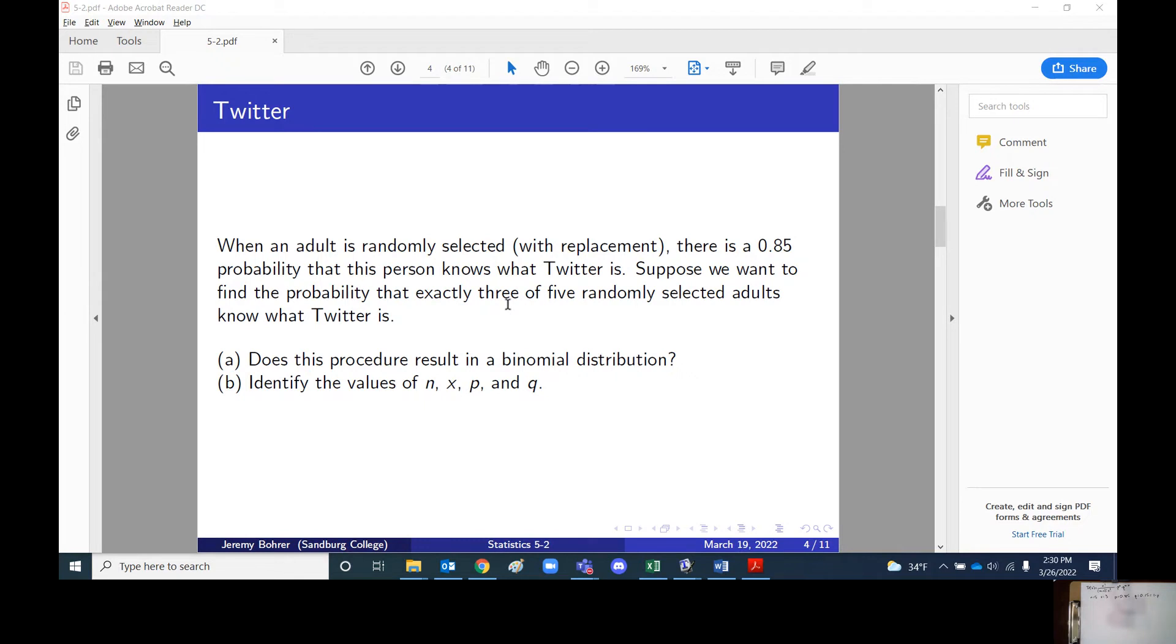When an adult is randomly selected with replacement, there is a 0.85 probability that this person knows what Twitter is. Suppose we want to find the probability that exactly three of five randomly selected adults know what Twitter is.